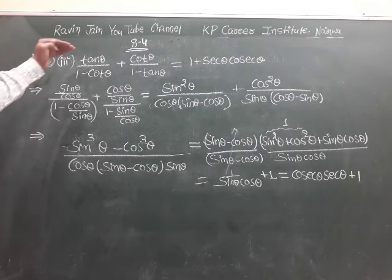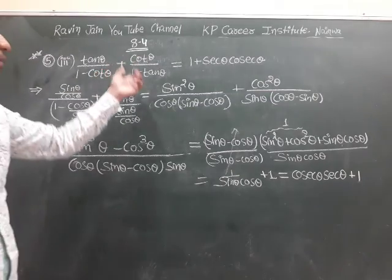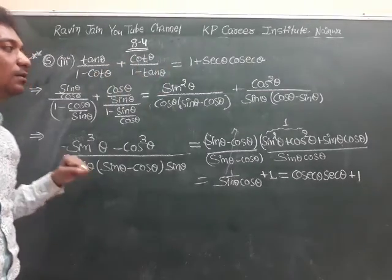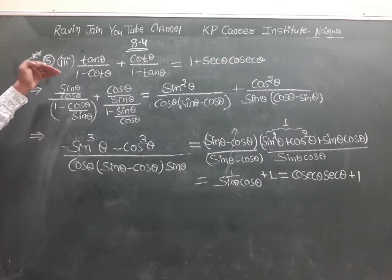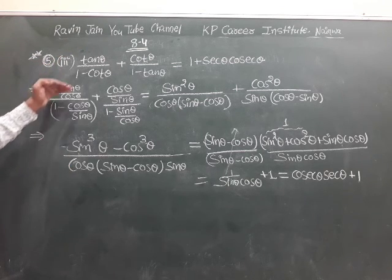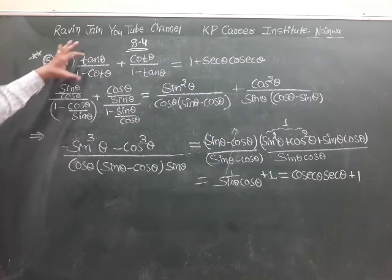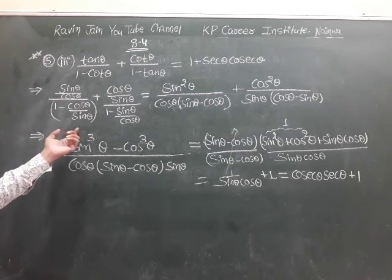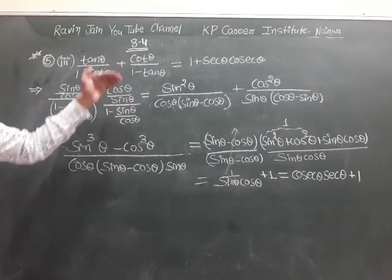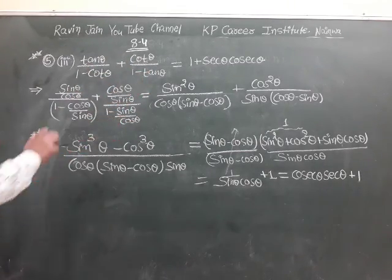Let's start the third part. We need to show that tan θ/(1 - cot θ) + cot θ/(1 - tan θ) = 1 + sec θ·cosec θ. Write tan θ as sin/cos and cot as cos/sin. It becomes sin θ/cos θ divided by (1 - cos θ/sin θ), and cos θ divided by (1 - cos θ/sin θ).